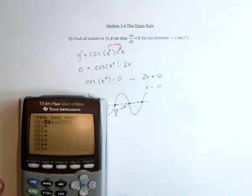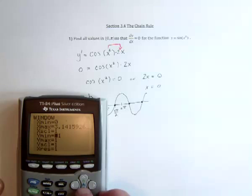So we graph sine of x squared on the window from zero to just pi. The biggest sine it gets is one, so negative one to one for y is fine. And now take a look at the graph.